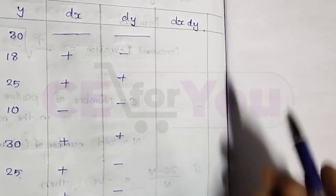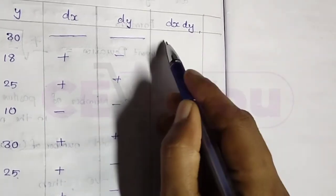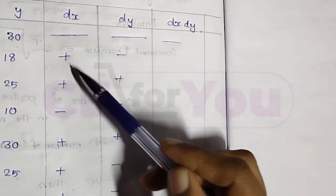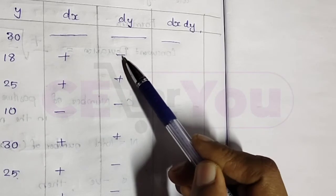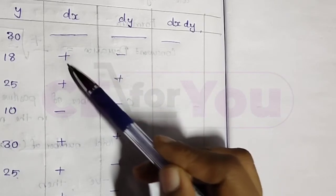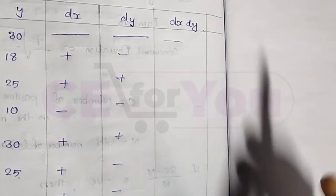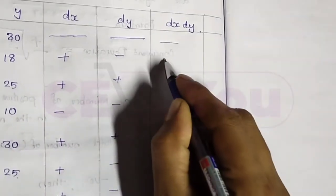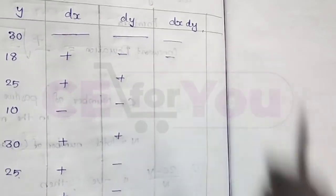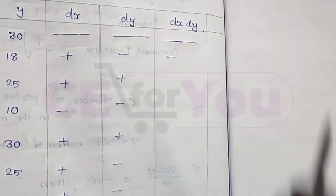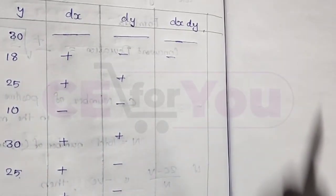Now compute dx into dy. Multiply the corresponding signs. Plus and minus gives minus. Plus and minus gives minus.